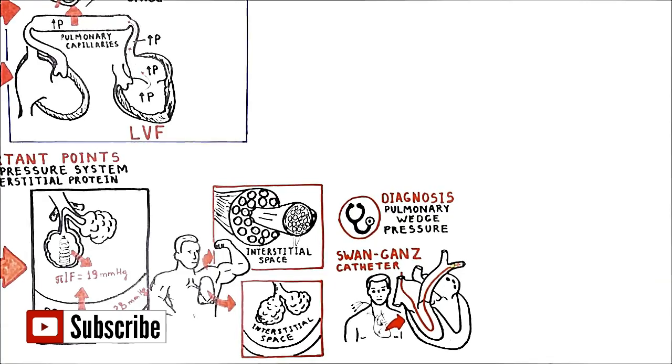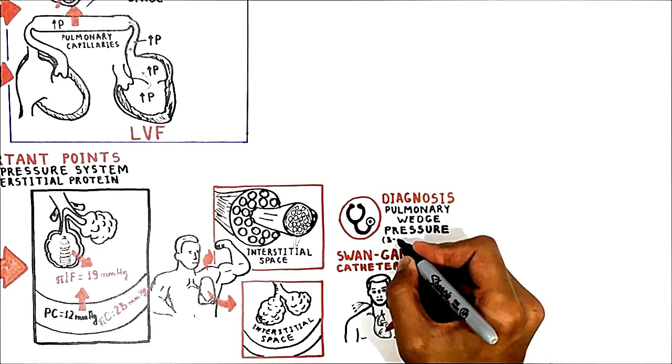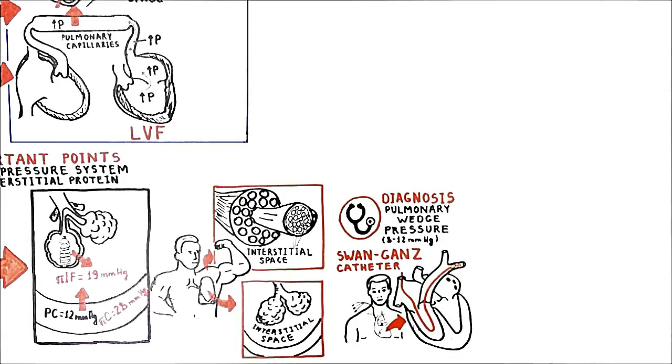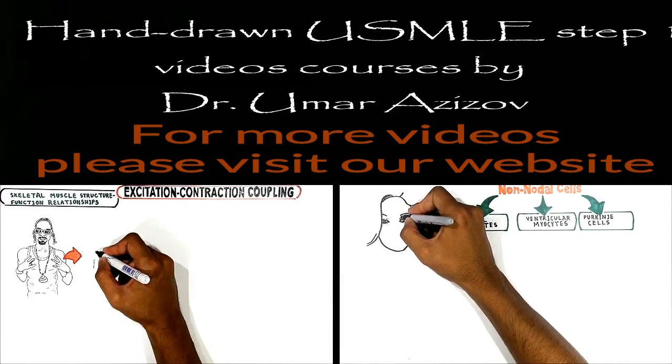Normal wedge pressure in a pulmonary capillary is roughly 8 to 12 mmHg.